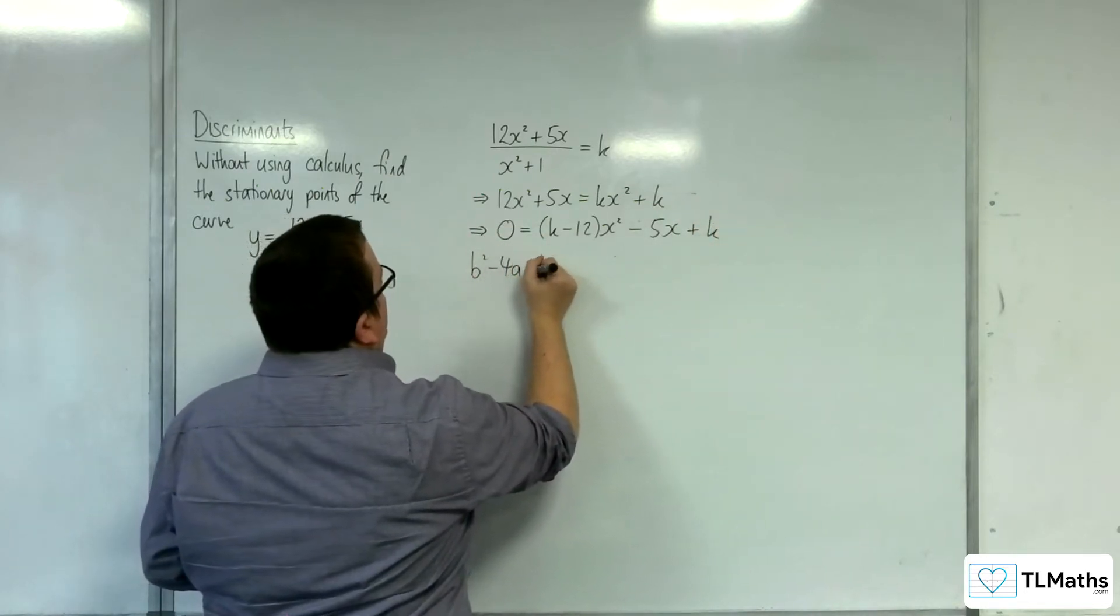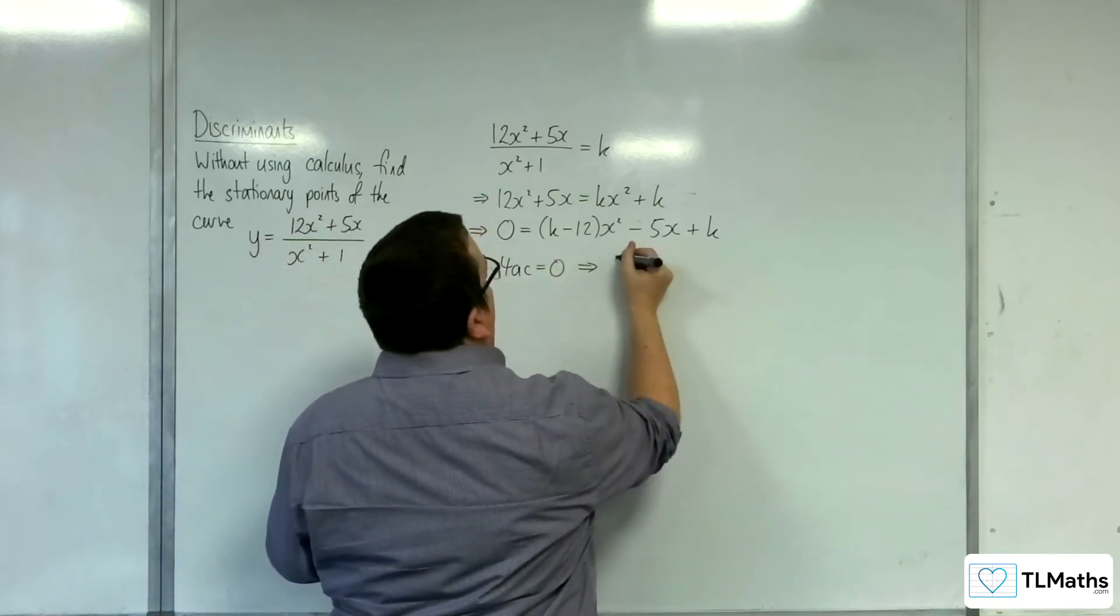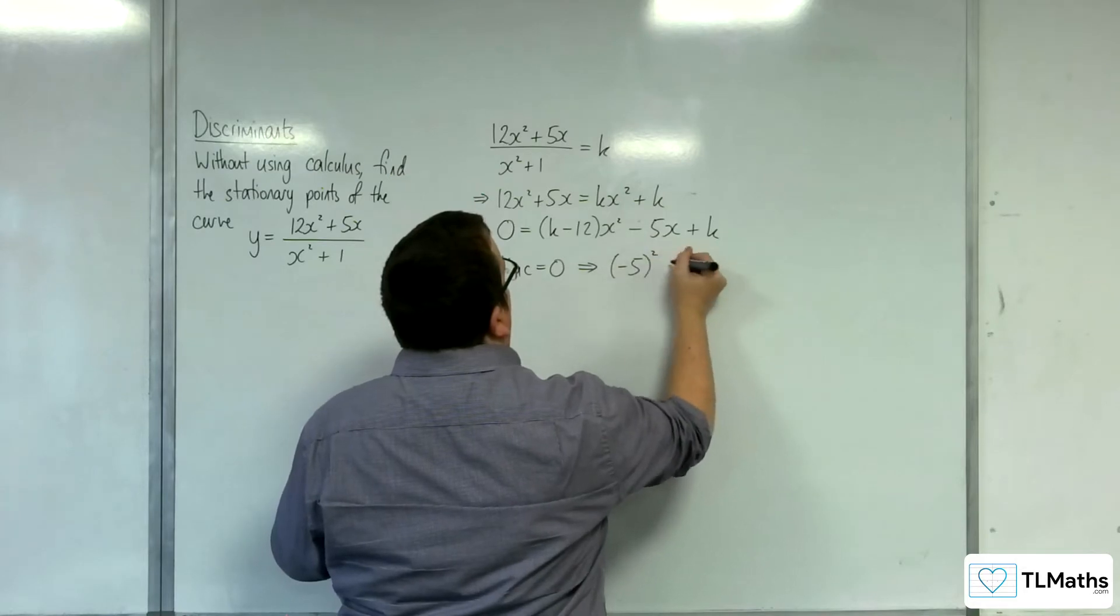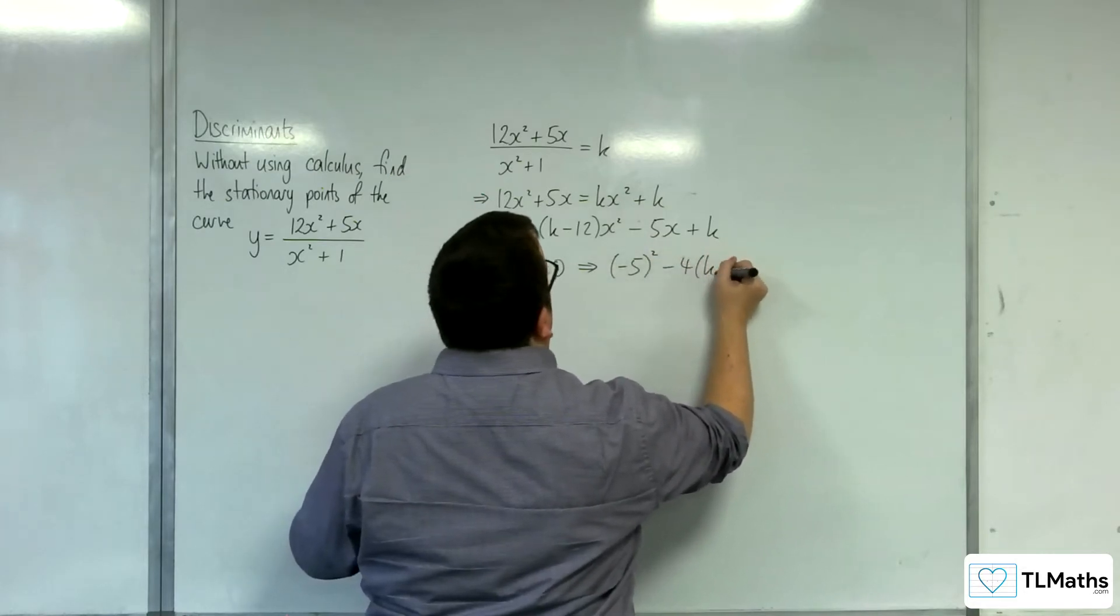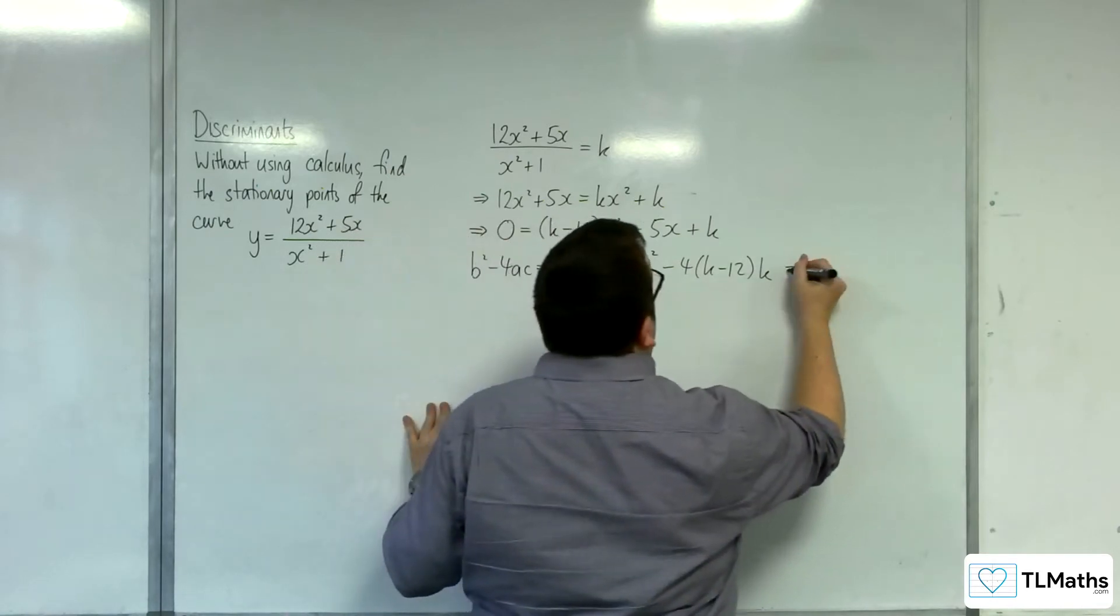We're going to need the discriminant to be equal to 0, which implies that minus 5 squared take away 4 lots of k take away 12 times by k is going to be equal to 0.